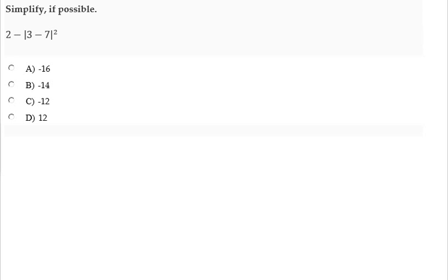Simplify, if possible, 2 minus the absolute value of 3 minus 7, all of that squared.